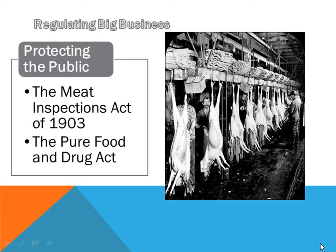He comes across one section and just loses it and throws up because of what is written in The Jungle. The Jungle, written by Upton Sinclair — who was a muckraker — had gathered stories and tales from the Chicago meatpacking industry and compiled them into a fictional, semi-fictional account and had it published.